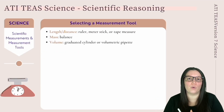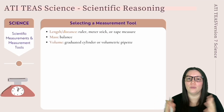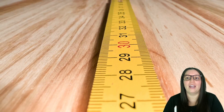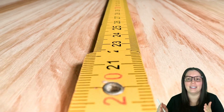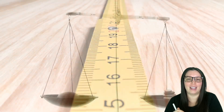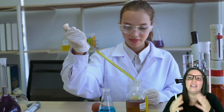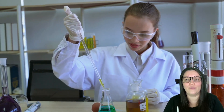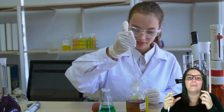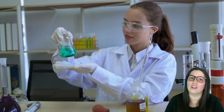Scientists must select the appropriate measurement tool depending on what is being measured. To measure length, you could use a ruler, a meter stick, or a tape measure — length being the distance from one end to another. To measure mass, you'd use a balance — mass being the amount of matter in an object. To measure volume of a liquid, you'd use a graduated cylinder or a volumetric pipette. It's important to choose the right tool, or you'll end up with inaccurate results.